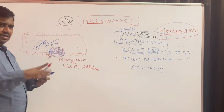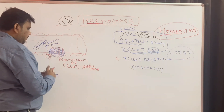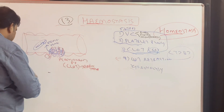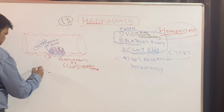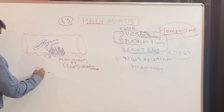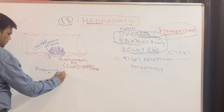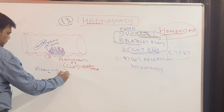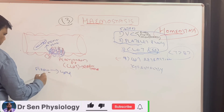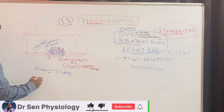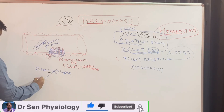Once the wound is permanently sealed, the fifth step is fibrinolysis. As the name suggests, the fibrin that has done its function now has to be lysed. Fibrinolysis is carried out by plasmin.